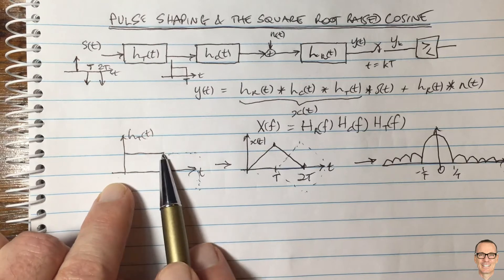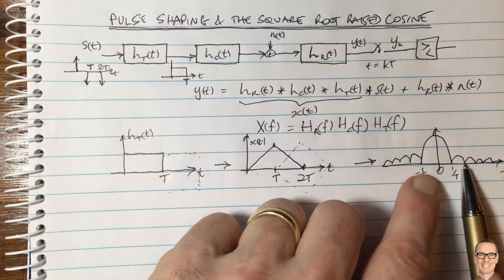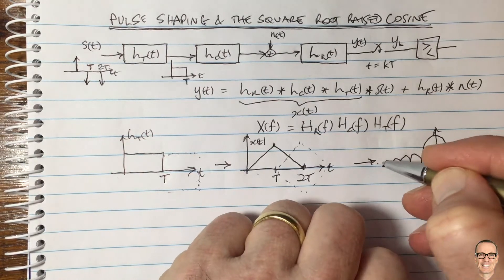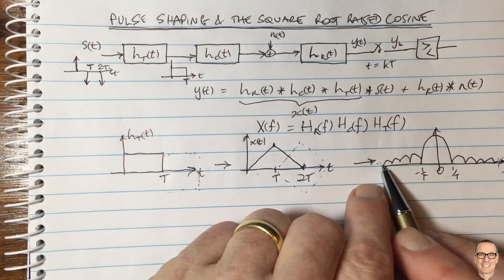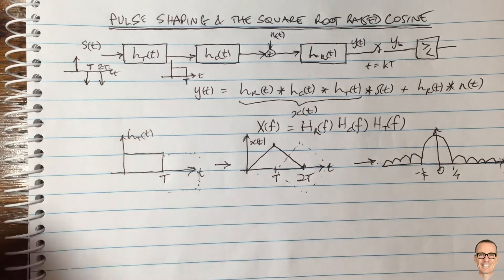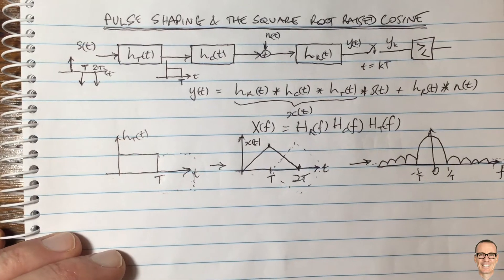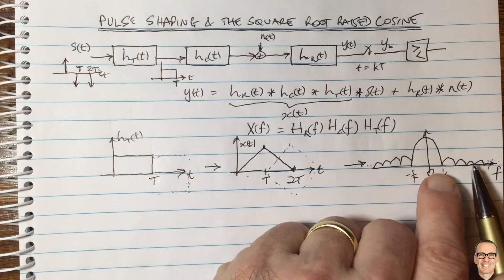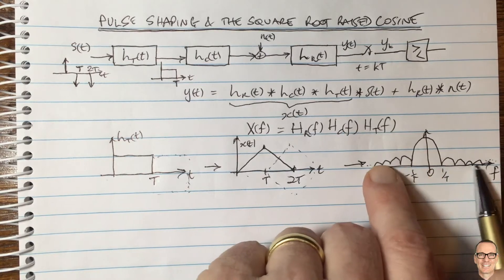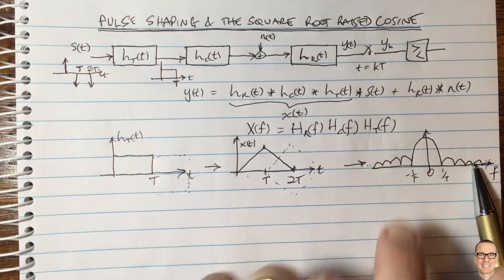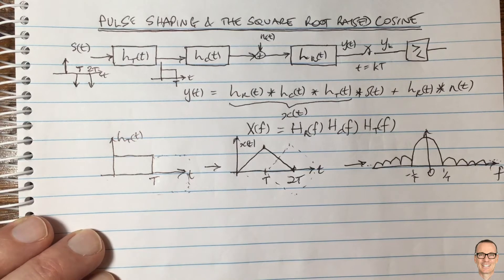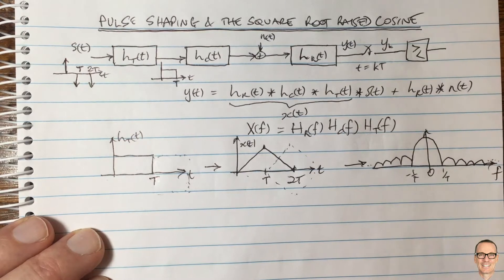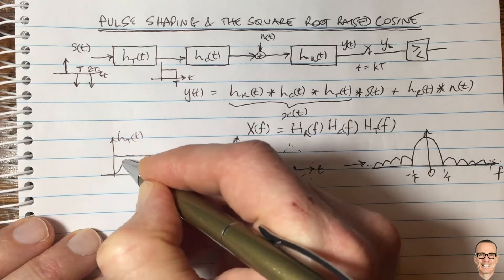The square pulse is not a good choice because in the frequency domain the sinc² extends to infinite frequency — the sidelobes die down but keep going forever. In radio systems we want to place other channels in neighboring frequency bands, and a sinc function in the frequency domain causes a lot of interference. The sharp corners of the square pulse lead to high-frequency content, so we need something smoother.